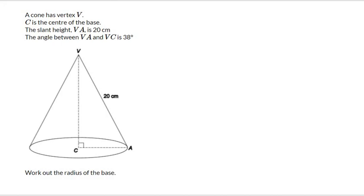A cone has vertex V. So that's the one right at the top, right over the center. C is the center of the base. The slant height is given as 20. And the angle between VA and VC is 38 degrees. So I'm going to mark that in 38 degrees. Work out the radius of the base. So I'm going to put a nice R for the radius. And hopefully you can see immediately we have a lovely right angle triangle there.